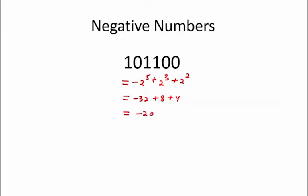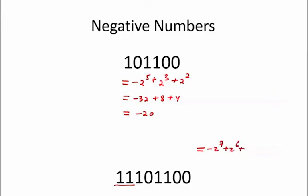In the case of negative numbers, if we wanted to represent the same value negative 20 using more bits, one would simply need to append leading 1's to the number to end up with the same value. For example, negative 20 using 8 bits is 11101100. Let's check that this is correct. This number is equal to negative 2 to the 7th plus 2 to the 6th plus 2 to the 5th plus 2 cubed plus 2 squared, which is equal to negative 128 plus 64 plus 32 plus 8 plus 4, which is negative 128 plus 108, and that is equal to negative 20.